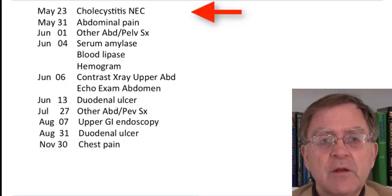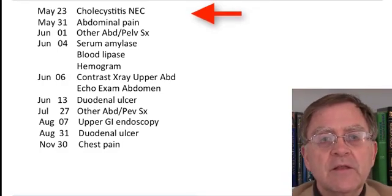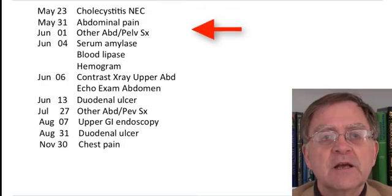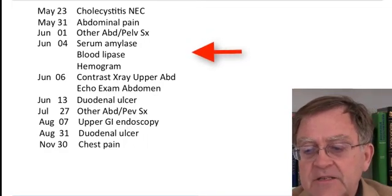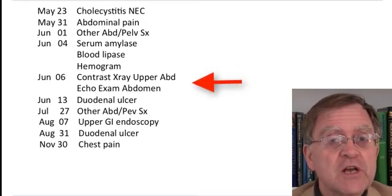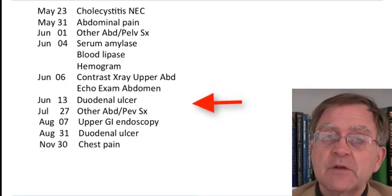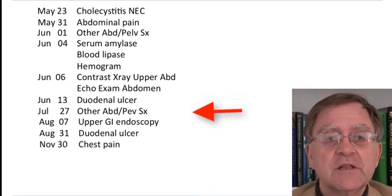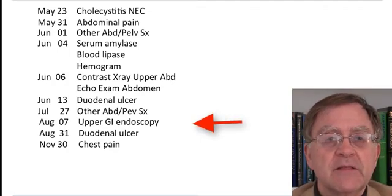There's a story here. Someone comes in with abdominal pain, initially diagnosed as cholecystitis, but for reasons not recorded, the doctor gives up on that diagnosis. The doctor does tests for pancreatitis, and there may be an indication of blood loss from the complete blood count, leading to x-ray examinations perhaps suggested by the presence of an ulcer. The pain continues, perhaps doesn't respond to simple anti-ulcer medications, and the physician, with some doubt, finally orders an endoscopy, at which point we definitively say this is a peptic ulcer.